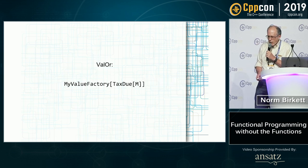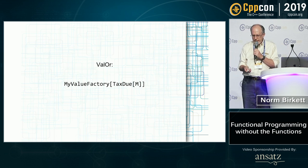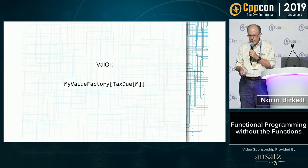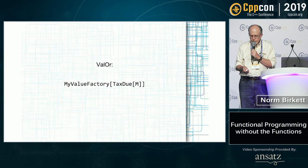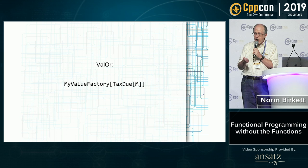In Valor, the only actual piece of data going into this expression is M, the month. The factory is actually asking: do I need to calculate this without accessing any of the inputs? So we're doing caching to avoid recalculation.